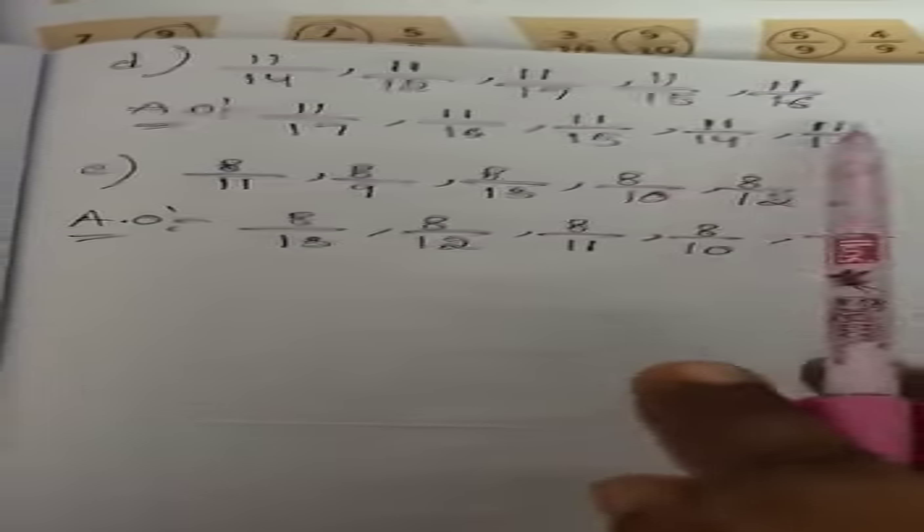So write: 11/17, next is 11/16, then 11/15, 11/14, and last 11/12 which is the biggest fraction.